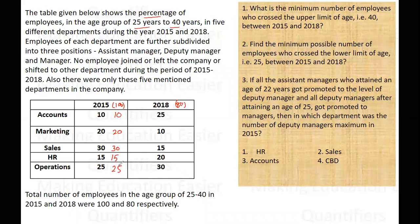So these are the number of employees in these departments. Now in 2018 the total number was 80. In the Accounts department there were 25% in this age group, so 25% of 80 is 20. 10% of 80 is 8. 15% of 80 is 12. 20% of 80 is 16. And 30% of 80 is 24. So these are the number of employees in each department.